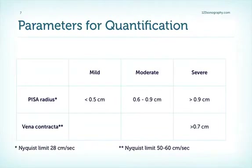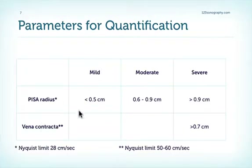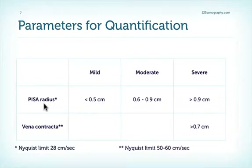For those who like numbers to quantify the severity of TR, here is the PISA radius and the vena contracta with respect to the different severities. Note that you have to use a certain Nyquist limit, because these parameters change if you change the Nyquist limit. Here are the reference values for the Nyquist limits. You can also find this table in your fact sheets.